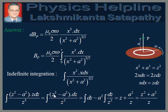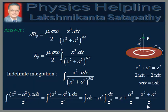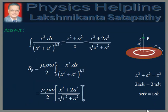Cancelling one z, we get (z² − a²) / z² dz. Separating terms: z²/z² dz − a² dz/z². These are two separate integrals. The integral of dz gives z, and the integral of dz/z² = −1/z, so by the negative sign this becomes +a²/z. Making z the common denominator: (z² + a²) / z. Now substituting back: z² = x² + a², so z² + a² = x² + 2a², and z = √(x² + a²).